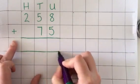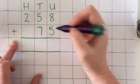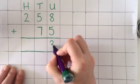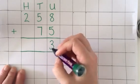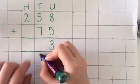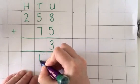I add the units first. Eight units and five units is 13 units, so the three can go in the answer space. But the one ten from that 13 can't be put in the answer space yet because there are other tens still to be added.